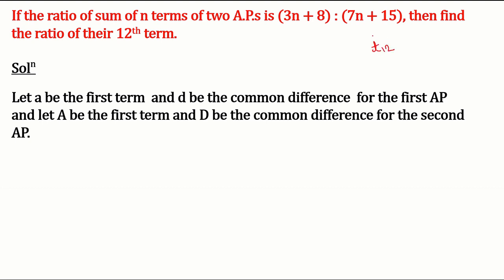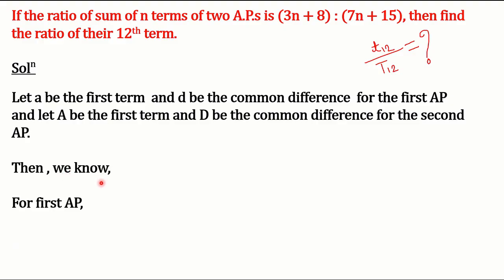Let's use small t for the first AP and capital T for the second AP. So the question asks for the ratio of the twelfth term — we need to find out this ratio. We know Sn for the first AP is given by n/2 times (2a + (n−1)d).